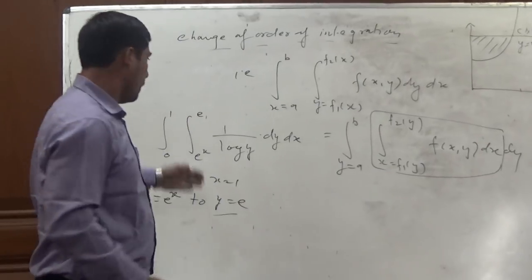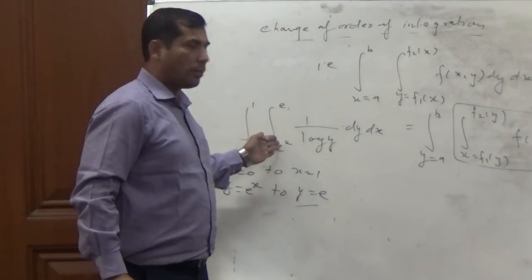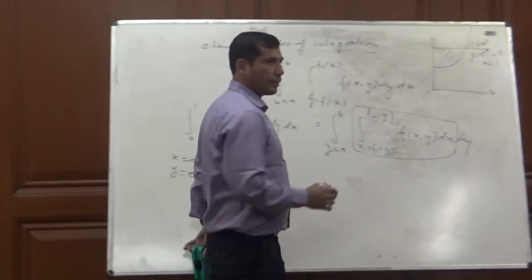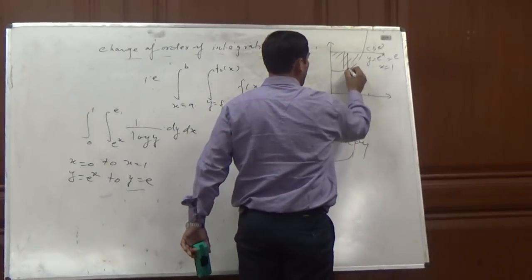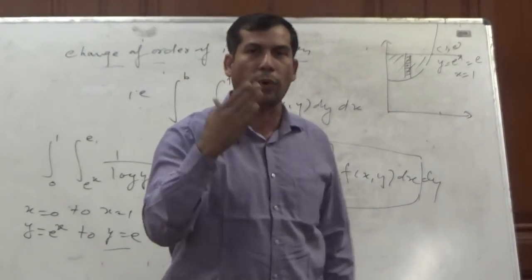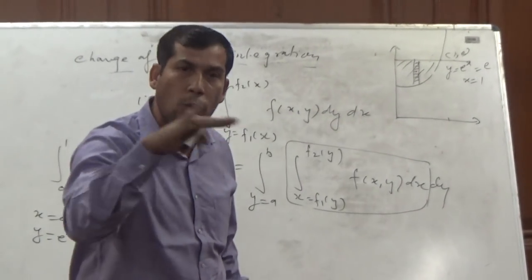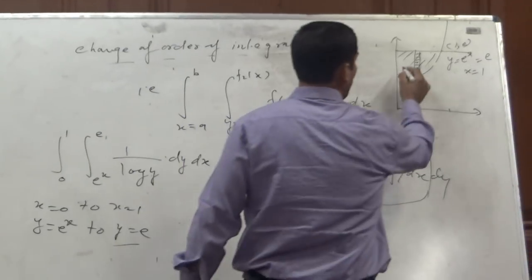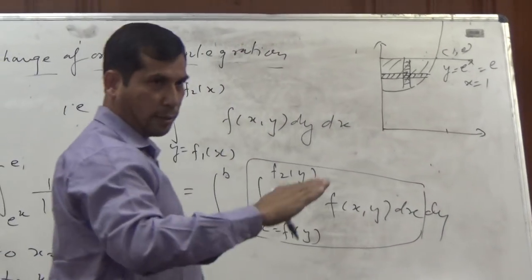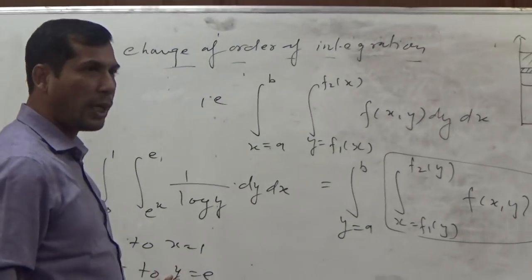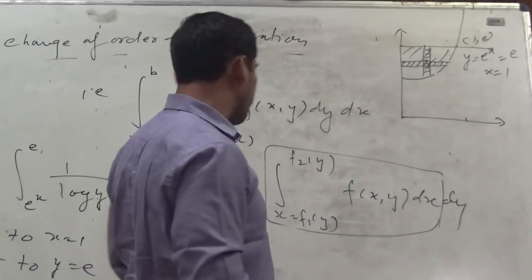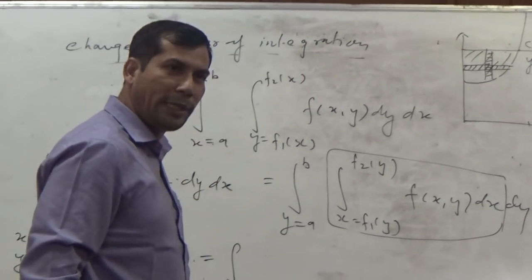In the original integral, the strip is parallel to the y-axis. In the change of order of integration, if the strip is parallel to the y-axis, we will now consider it parallel to the x-axis. So we change the strip to be parallel to the x-axis, which means the integration order also changes. The first integration must always have constant limits.